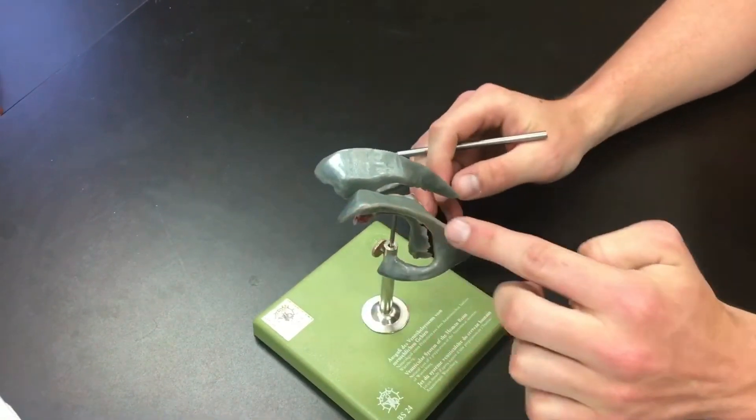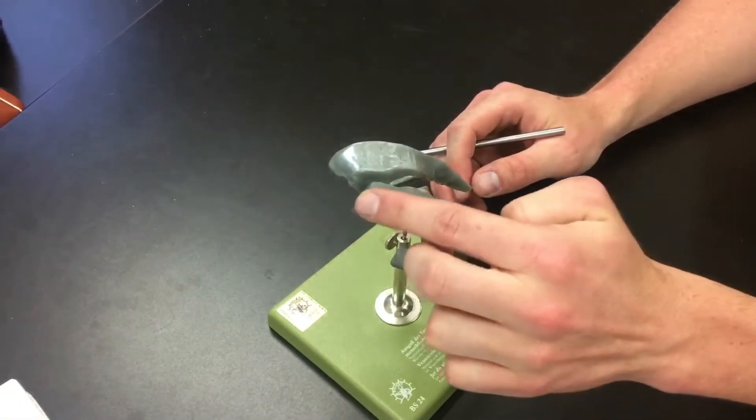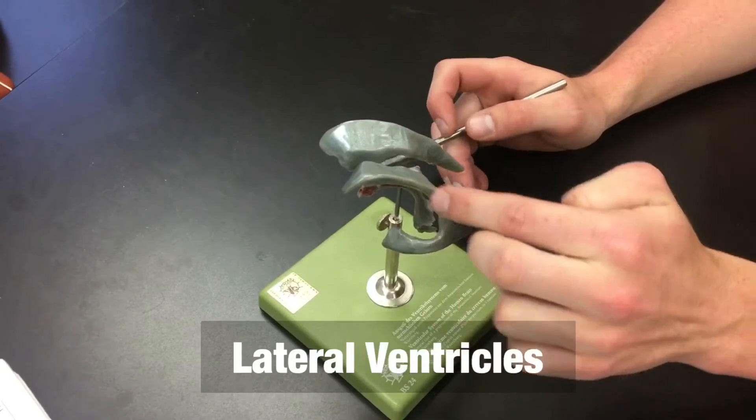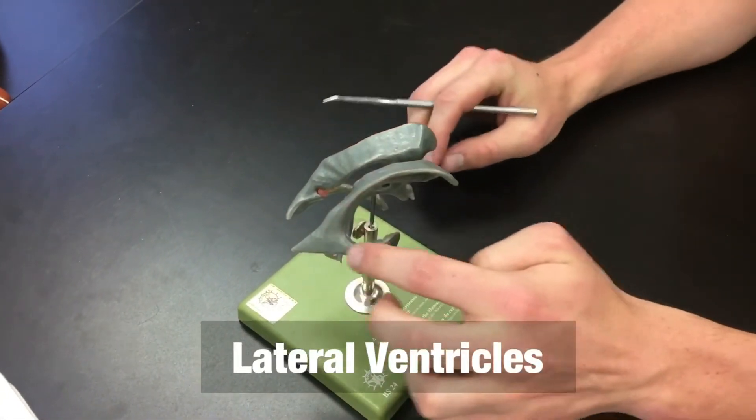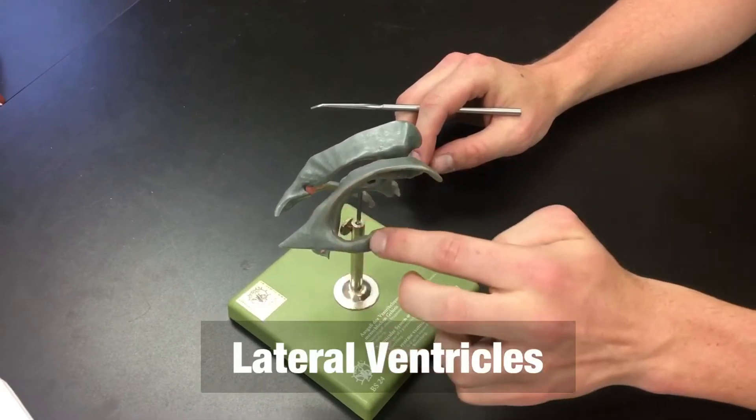Now what you can see here are the lateral ventricles. So these long parts on either side, right and left, are the lateral ventricles.